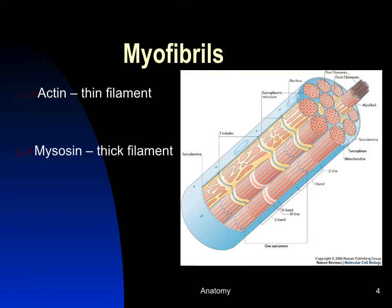Myofibrils are arranged into sarcomeres, which have a regular arrangement of thick filaments (myosin) and thin filaments (actin), giving the striated appearance. A myofibril is made up of many sarcomere units back to back. The proteins themselves are referred to as myofilaments or just filaments.